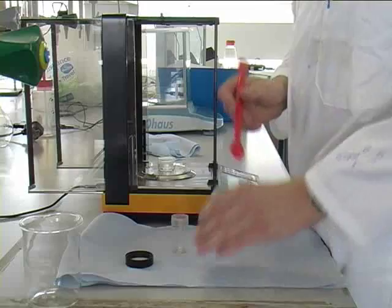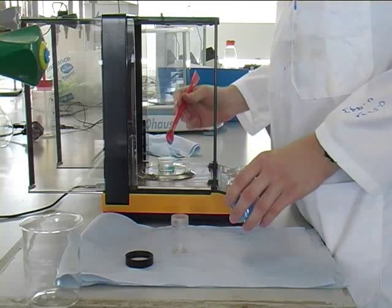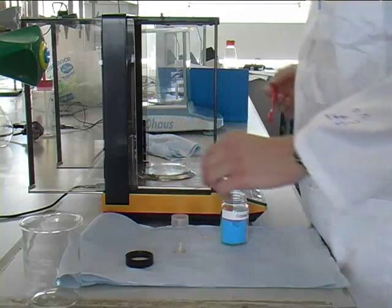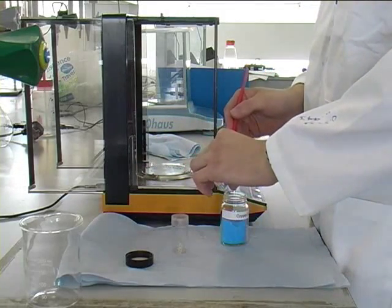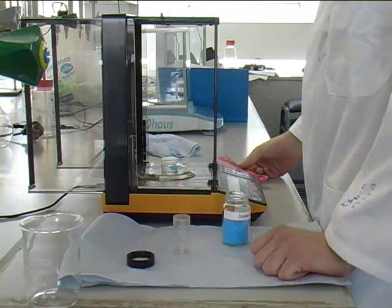Now he hasn't tared it so how is he going to know what he's going to use? He's also committing the crime of weighing on the balance so any spillages will go on the balance. He hasn't closed the doors and he's weighed too much out so he's putting the excess back into the bottle. You should never do this.